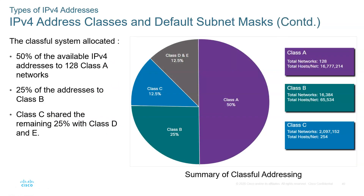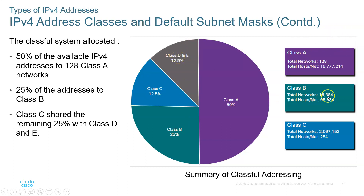Looking at the available IPs: Class A contains 50% of all IP addresses, Class B has 25%, Class C is 12.5%, and the remaining two classes share the other 12.5%. This information does come up on exams like CompTIA Network+ or possibly the CCNA.